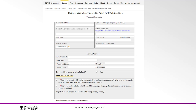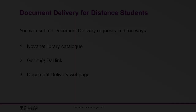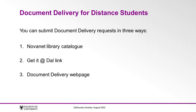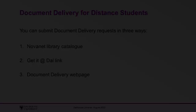Check out the video description for a list of participating libraries. You can submit document delivery requests in three main ways: the Novanet Library Catalog, the Get It at Dal link, and through the document delivery webpage. Let's walk through each of these, starting with the Novanet Library Catalog.